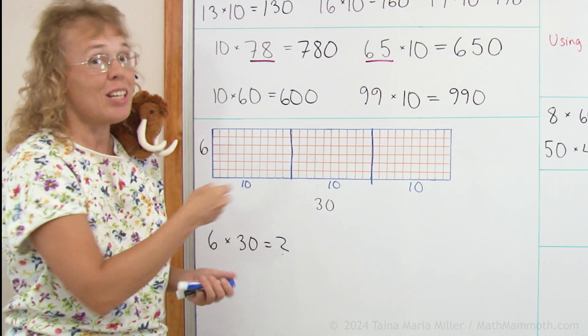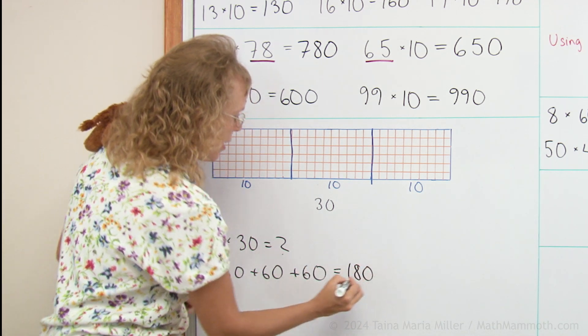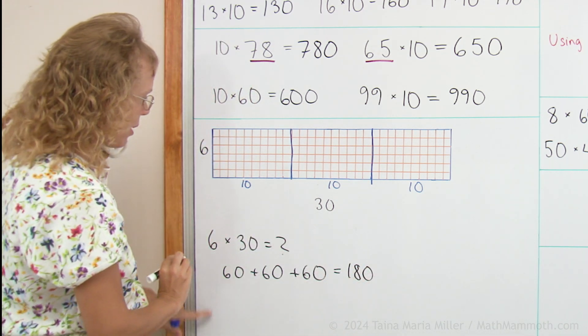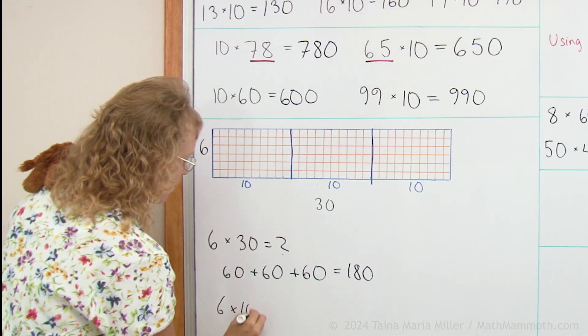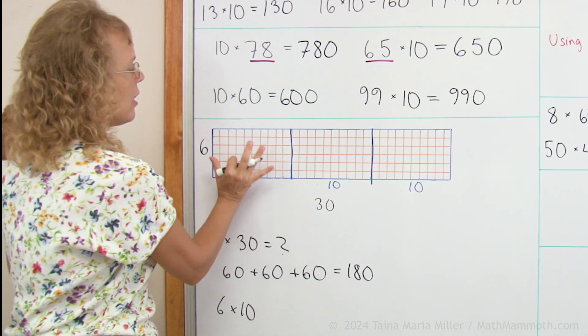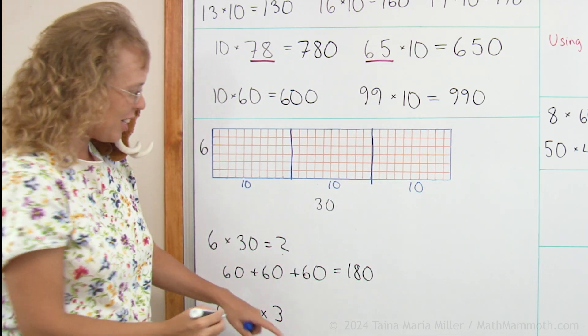60. Here's another 60 squares and another 60 squares. So we get 60, 60, 60. 180, right? I will also write this this way. Here I have 6 times 10, right? And then that I have 3 times. So it is 6 times 10 times 3.